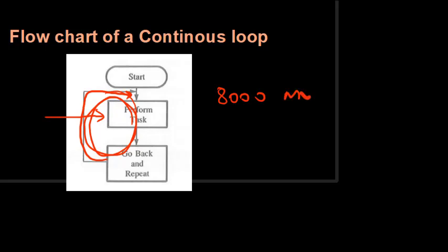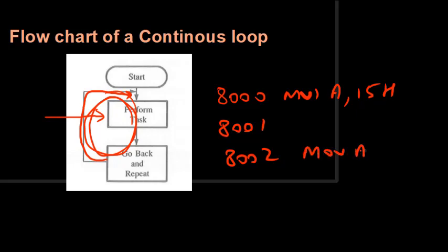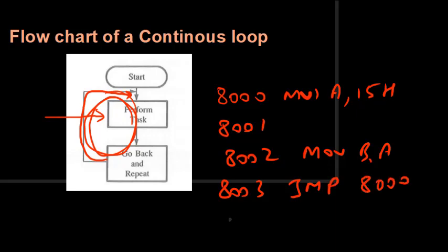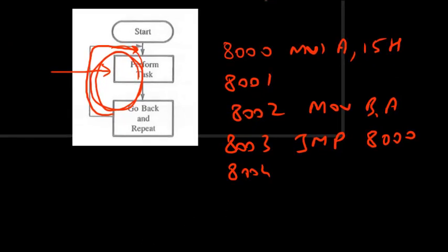For example, starting at address 8000, we write MVI A, 15H — a two-byte instruction — then at 8002, MOV B, A — a one-byte instruction — and at 8003, JMP 8000 — a three-byte instruction ending at 8005. When this program runs, at 8000 it transfers 15H into A, then transfers A to B, then jumps back to 8000. This is a never-ending program that runs until the system is shut down — this is how a continuous loop is generated.